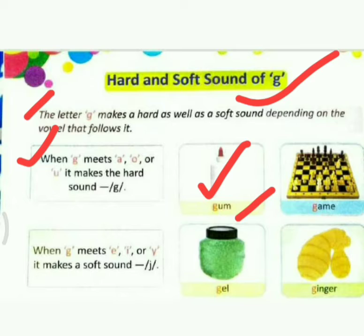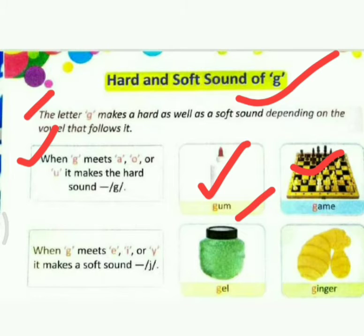One more example: game — G-A-M-E. Game. So children, how do you know this is a hard sound? Very good — because the vowel following G is A, and A, O, U make the hard sound.